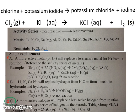And lastly, of course, we'll balance the reaction. We have two chlorines on the left, so let's make two chlorines on the right. That made two potassiums on the right. So let's make two potassiums on the left. And this reaction is complete.